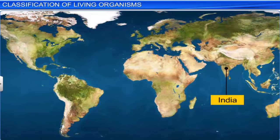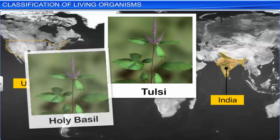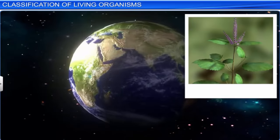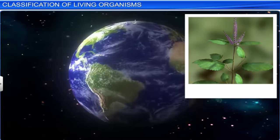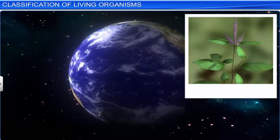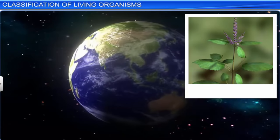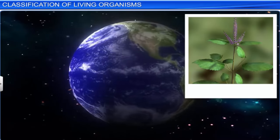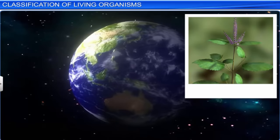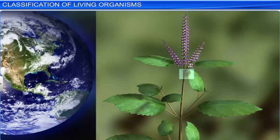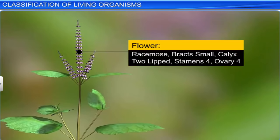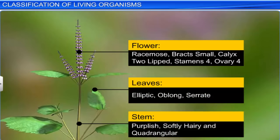It is common to find living organisms being known by different local names in different parts of the world. To avoid this confusion, the name of a living organism must be standardized, such that it is known by the same name the world over. This process is known as nomenclature. However, to name an organism, we need to know its correct description, and to what organism the name is attached to. This is known as identification.